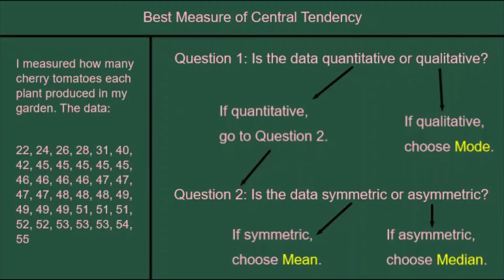Here we have a set of data, which is how many cherry tomatoes are produced by a bunch of plants in a garden. We ask question one: is the data quantitative or qualitative? This is quantitative, it's numbers. So that means we're not going to choose mode. Instead, we move on to question two.